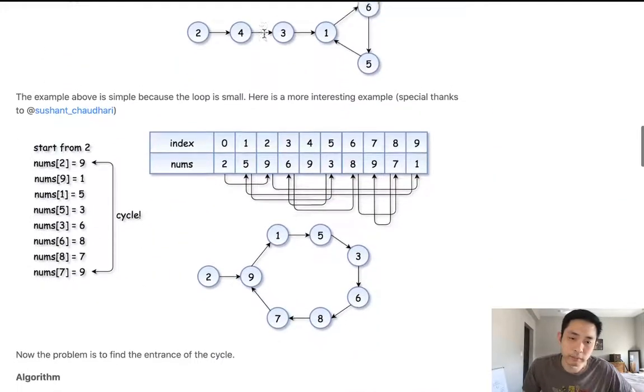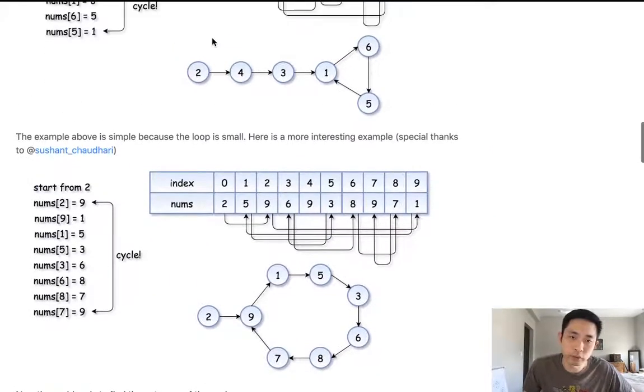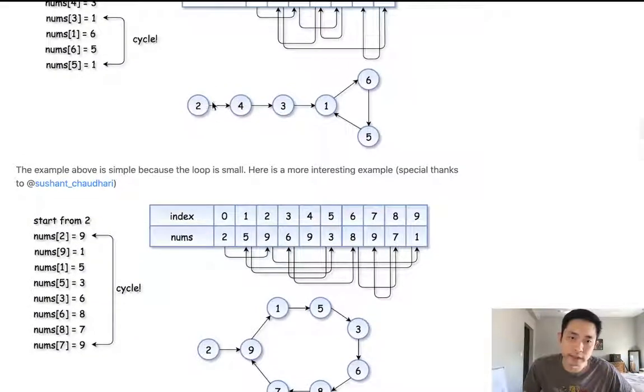Yeah, basically, if you were to visualize this as like a linked list, that one here is where the cycle begins, right? And that's going to be the duplicate number.